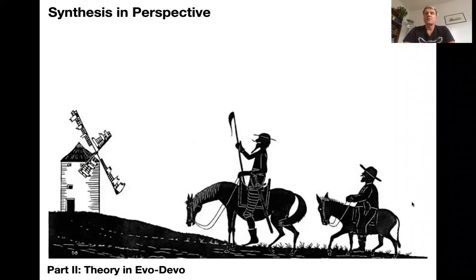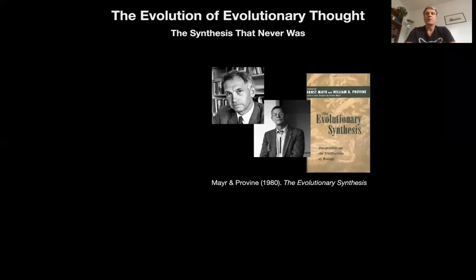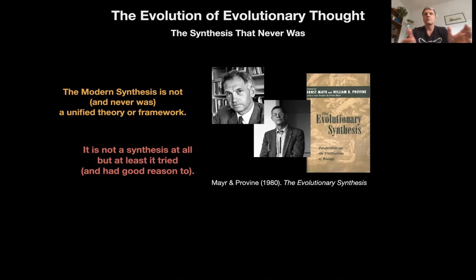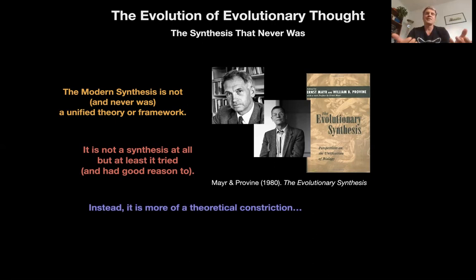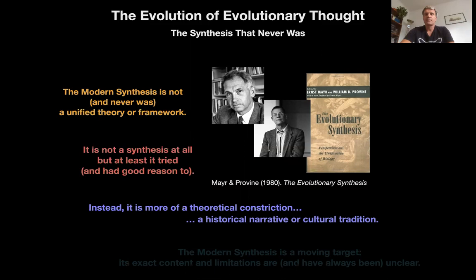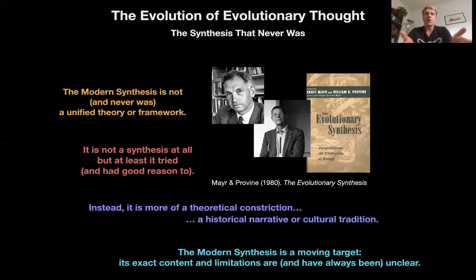Hello and welcome back to Beyond Networks, the evolution of living systems. Last time we talked about the modern synthetic theory of evolution — the synthesis that never was. It did manage to unify genetics and Darwinism, but beyond that remained a fractionated assemblage of models. It was really more of a theoretical constriction that excluded many phenomena of interest to evolutionary biologists and focused exclusively on population-level processes of genetic evolution. It is more of a historical narrative or cultural tradition, seen as a moving target with its exact content and limitations unclear.